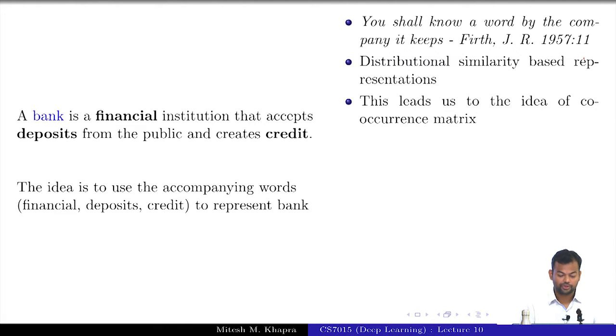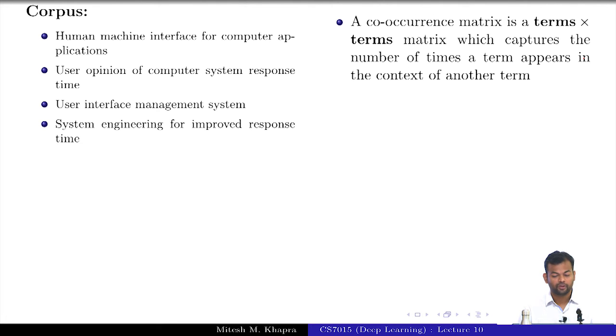The basic idea is to use the accompanying words, which in this example happen to be financial, deposits, credit, etcetera, to represent bank. To do that we will construct something known as a co-occurrence matrix. A co-occurrence matrix is a terms times terms matrix which captures the number of times a term appears in the context of another term. Can you guess how many rows would there be? Size of the vocabulary. How many columns would there be? Size of the vocabulary, right.